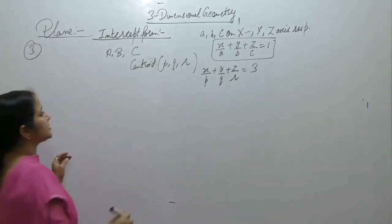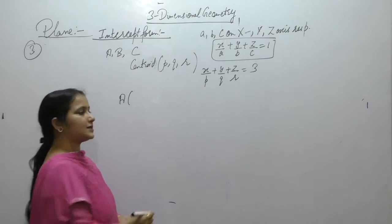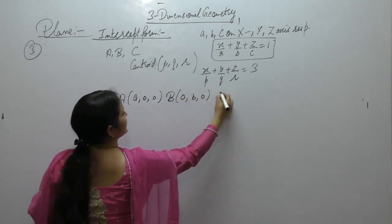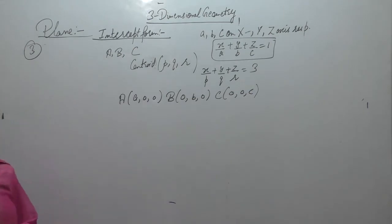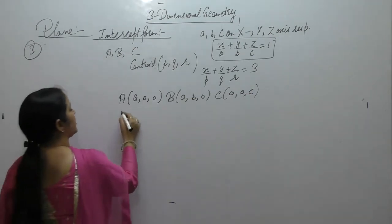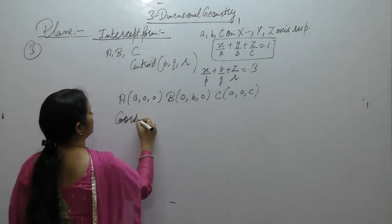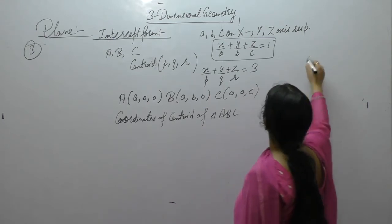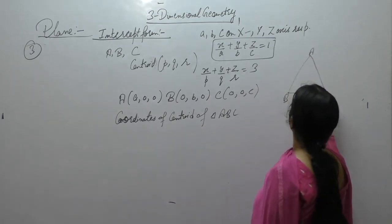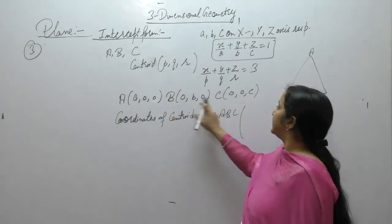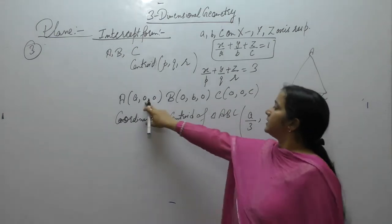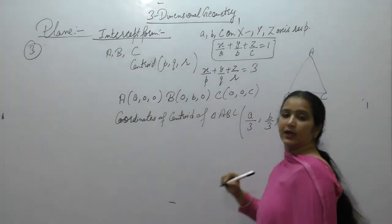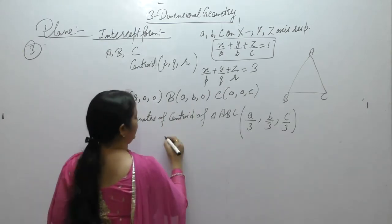The coordinates of point A are (A, 0, 0) since A is along the X-axis, so Y and Z coordinates are 0. B is along the Y-axis so coordinates are (0, B, 0), and coordinates of C are (0, 0, C). The coordinates of the centroid of triangle ABC are found by adding all coordinates.